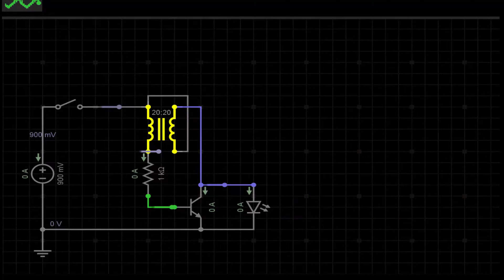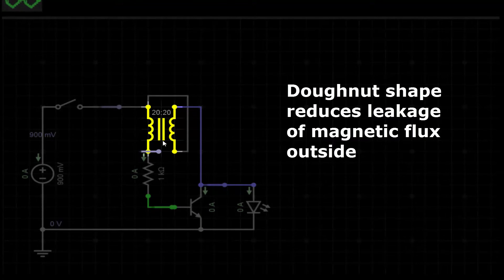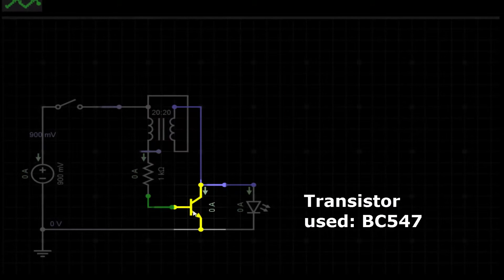The most important parts of the circuit are two coils wound in opposite directions on a donut shaped ferrite core and an NPN transistor used for fast switching.